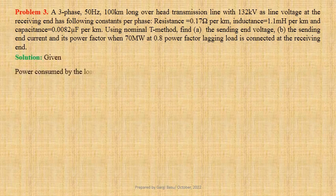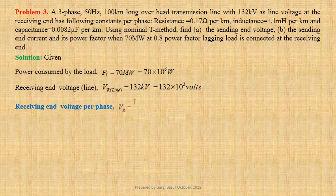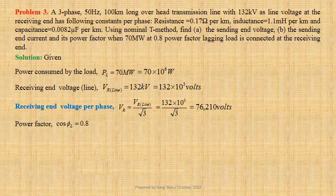Let us first write down the given data. Power consumed by the load, PL equals 70 MW, that is equal to 70 × 10⁶ watts. Line-to-line receiving end voltage, VL equals 132 kilovolts, that is equal to 132 × 10³ volts. For a star-connected system, receiving end voltage per phase, Vr equals VL divided by √3, that gives us 76,210 volts. Given load power factor, cos φL equals 0.8 lagging.